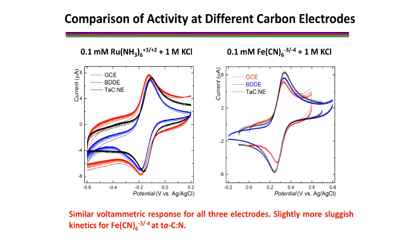Just to show a couple of examples where all the electrodes are compared with the same area: the ruthenium system shows glassy carbon in red, diamond in blue, and TAC in black — all virtually identical in terms of the response. Over here on the right is the ferro-ferricyanide system again. The peak splitting for the black one, the TAC, is a little bit larger than for the other electrodes, reflecting the more sluggish electron transfer kinetics for this system on TAC.